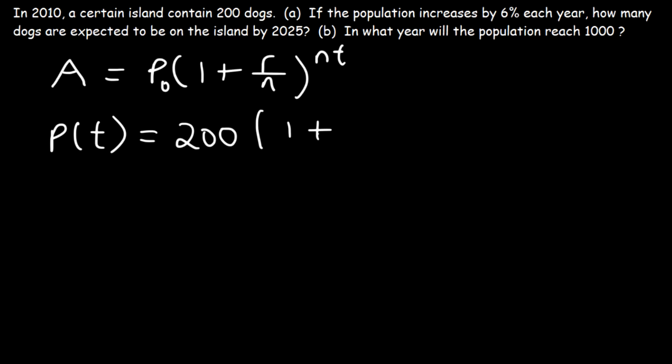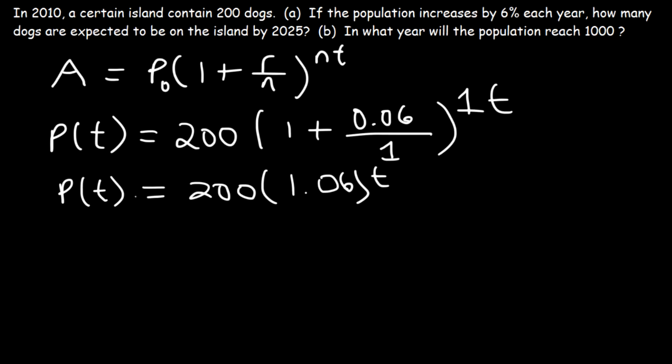Now the interest rate, R, is basically how much the population increases in a percentage per year. So it increases 6% each year. So R is .06. And that 6%, it happens every year. So we could say that it's annually. Or N is simply 1. And so this is the equation. It's going to be 200. And then 1 plus .06 is 1.06, raised to the T. So this equation will give us the population at any time T.